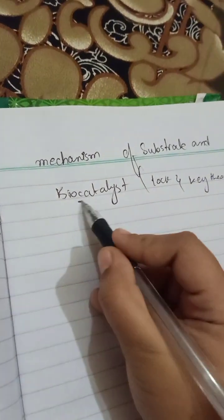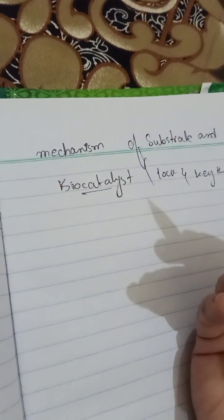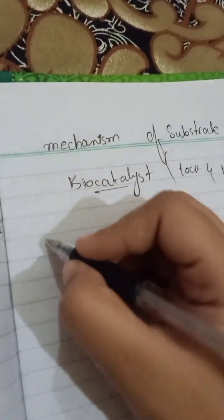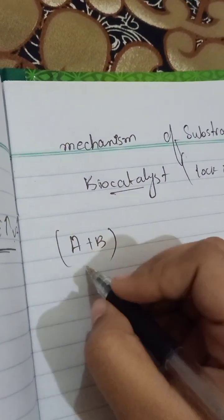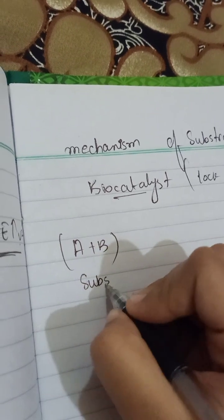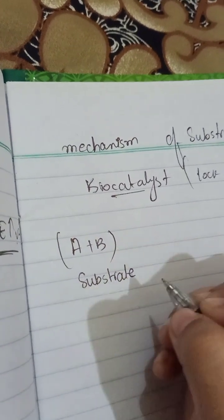One was the biocatalyst, which was enzyme and proteinase in nature. So for example, we are having a reactant that is A plus B. And the reactant is a substrate. We are calling reactant as a substrate.